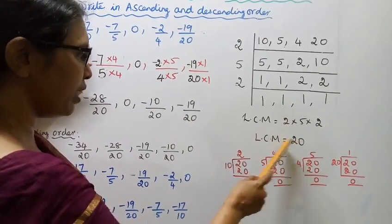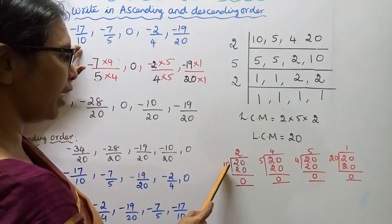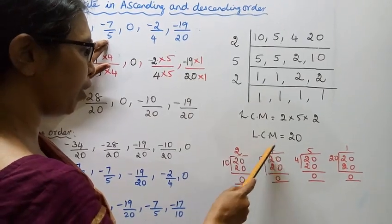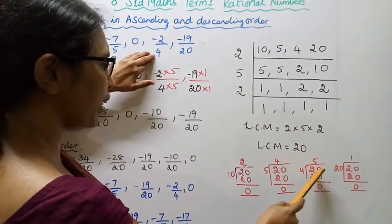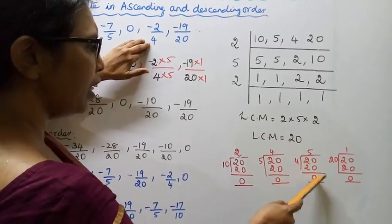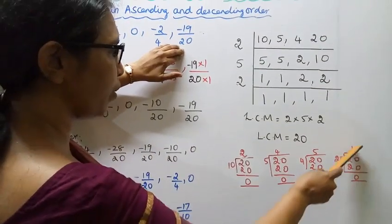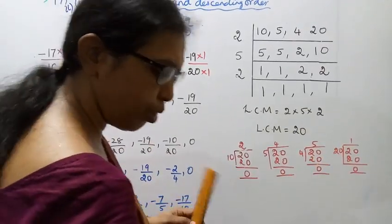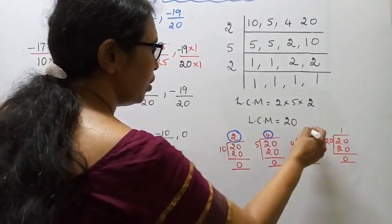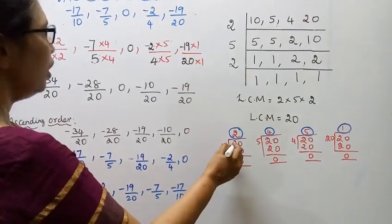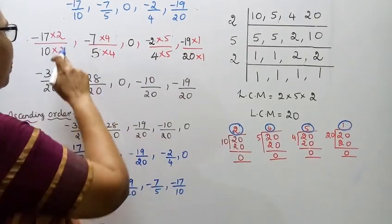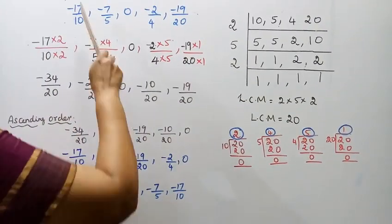Now convert each fraction. 20 divided by 10 is 2. Multiply 2 to the numerator: -17/10 × 2/2 = -34/20. For -7/5, 20 divided by 5 is 4, so -7/5 × 4/4 = -28/20.